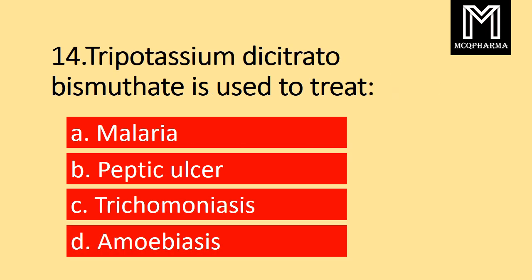Question number 14. Tripotassium citrobismuthate is used to treat: Option A malaria, B peptic ulcer, C trichomoniasis, D amoebiasis. Correct answer: Option B peptic ulcer.